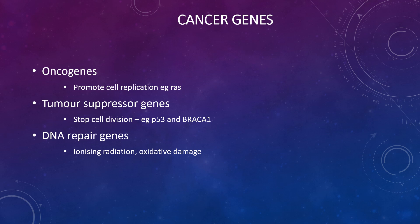There are types of cancer genes as well, such as oncogenes, tumour suppressor genes, and DNA repair genes. Oncogenes promote cell replication — one example is RAS. Tumour suppressor genes stop cell division — examples include P53 and BRCA1, which is involved in breast cancer. And DNA repair genes are involved with ionising radiation and oxidative damage.